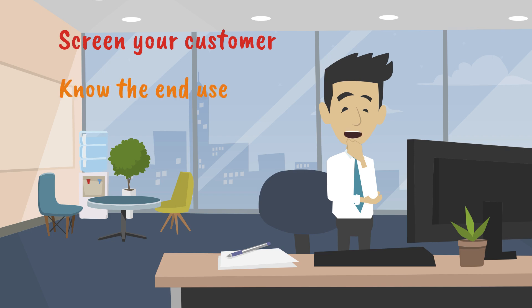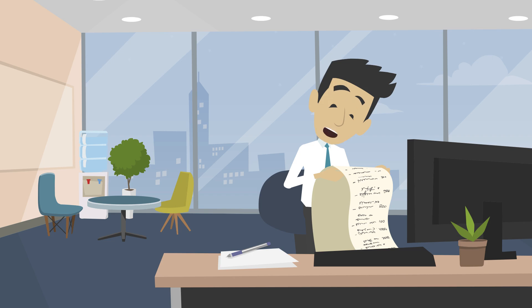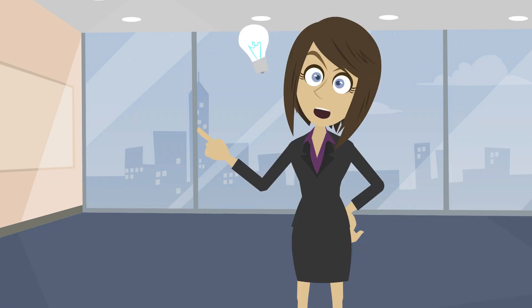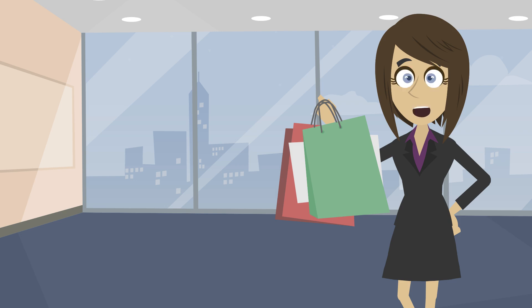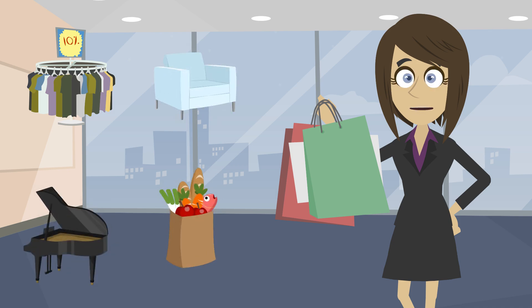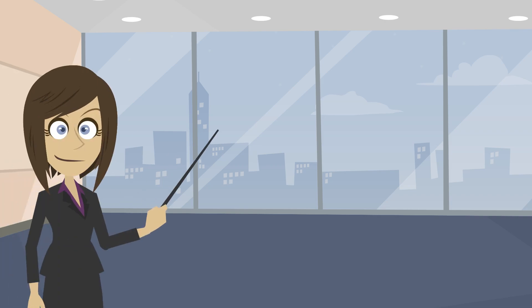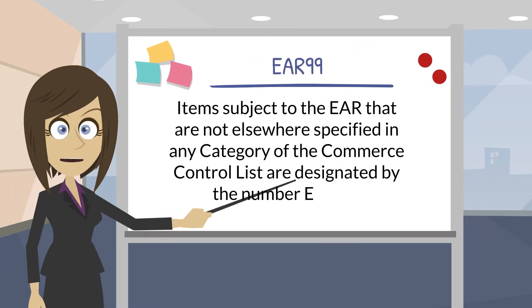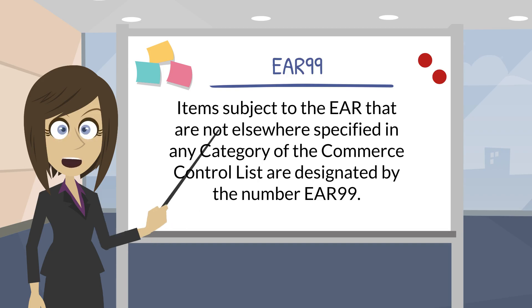What if I want to export my electric guitar to a friend in Germany to start a rock band? I don't see electric guitars on the Commerce Control List. You bring up a noteworthy point. Not all items are described on the Commerce Control List. Actually, a lot of consumer goods such as clothing, food, furniture, and musical instruments will not be found in the Commerce Control List. Items that are subject to the EAR but not described in the Commerce Control List are designated EAR-99. These items do not have a specific reason for control.